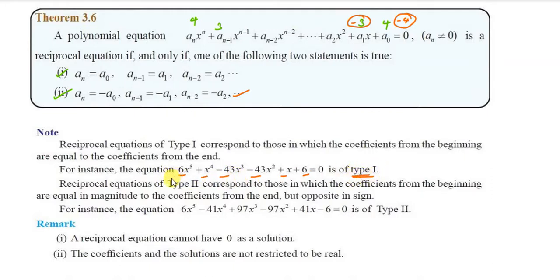This is very useful. The highest power is x^4 or x^6. Here the leading coefficient is 6 and the constant term is also 6 — this confirms it is Type 1.